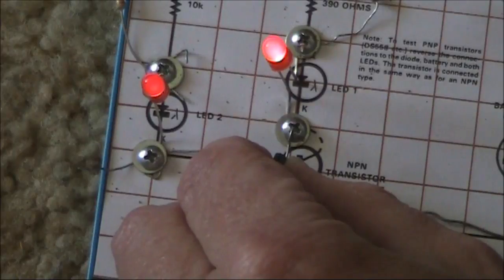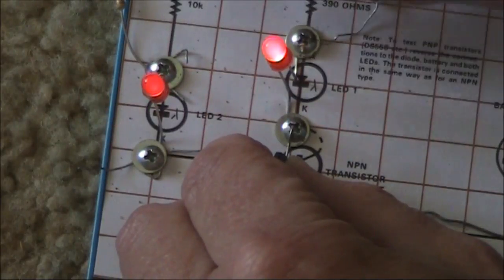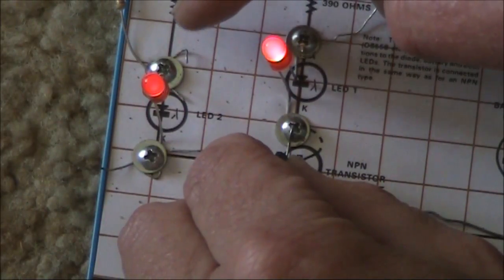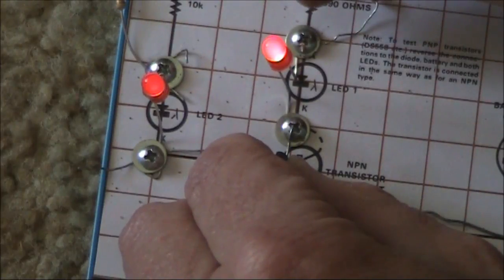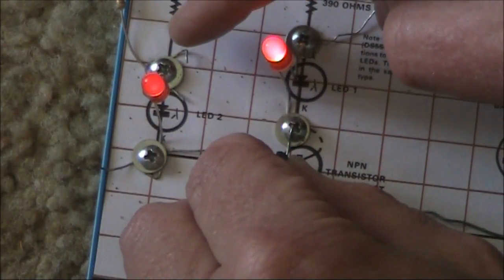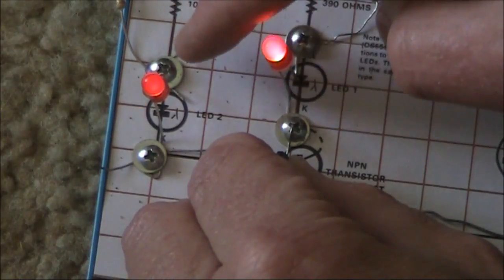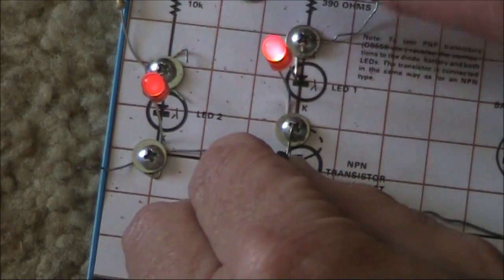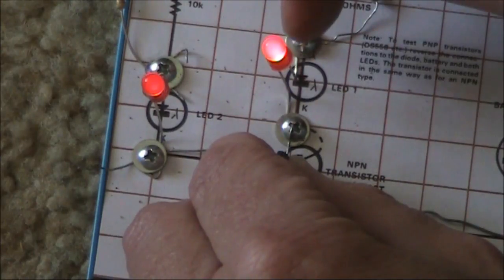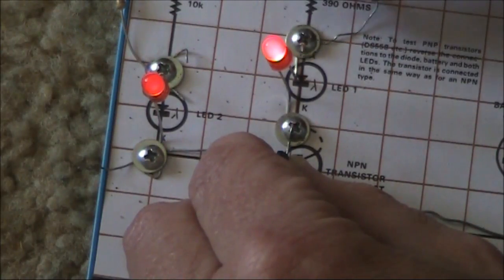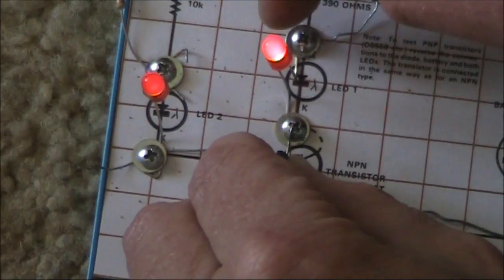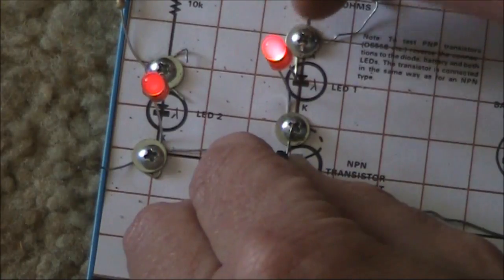You can see that this is behaving as it should. The base current is much lower than the collector current. So it follows that the LED on the left, in line with the base, is much dimmer than that in the collector line. The difference in brightness indicates that the transistor is operating correctly as an amplifier.